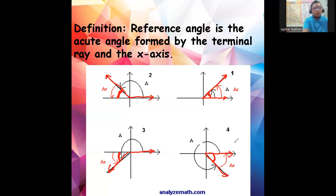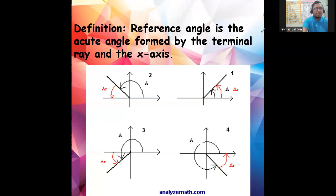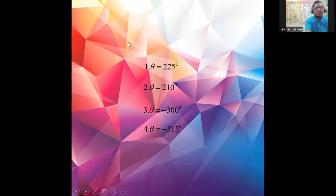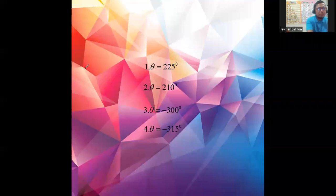You can use the reference angle along with special angles and special triangles — either the 30-60-90 or the 45-45-90 triangle — to find the terminal point. Let's work through an example using the angle 225 degrees.